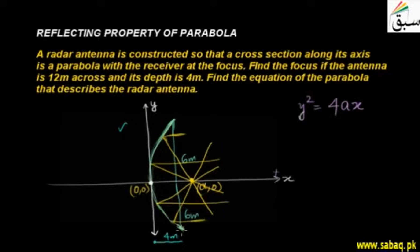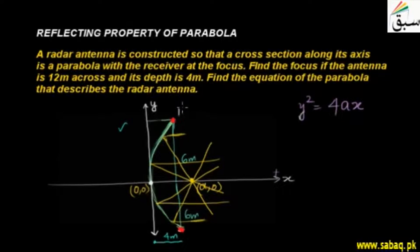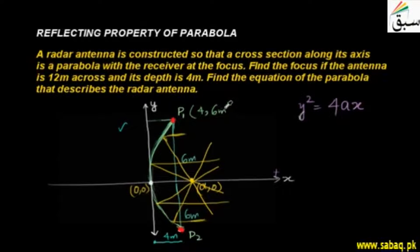Let me take a point on the parabola. If I talk about this point — let's call it P1 — its x-coordinate (depth) is 4 and its y-coordinate (ordinate) is 6, since the total width is 12 meters, giving half-width 6. So the point is (4, 6).